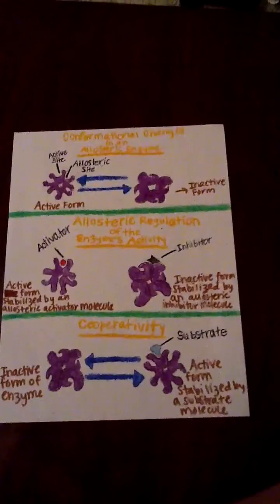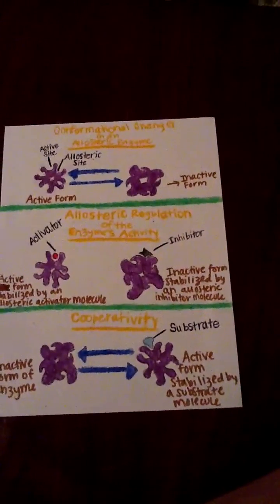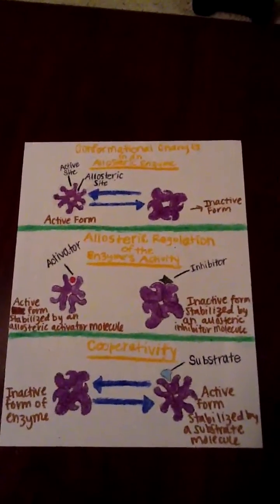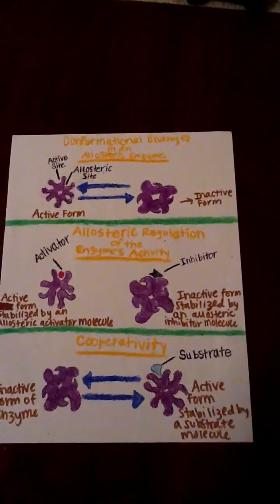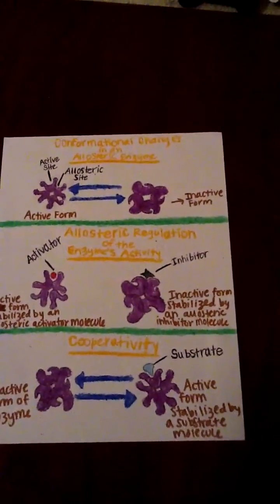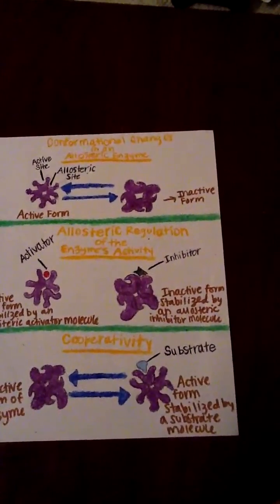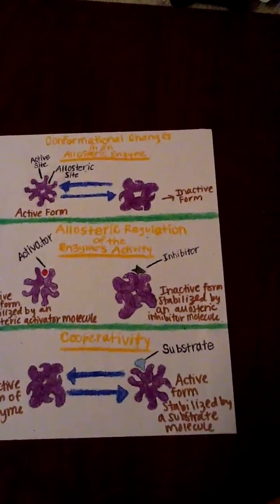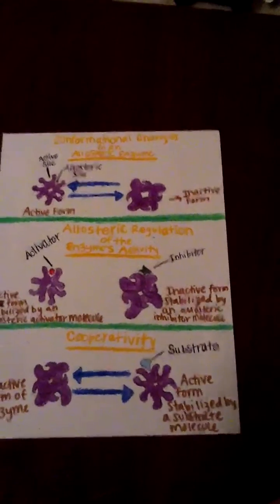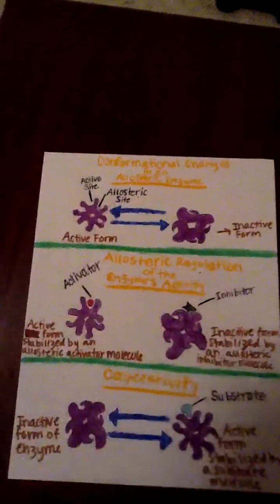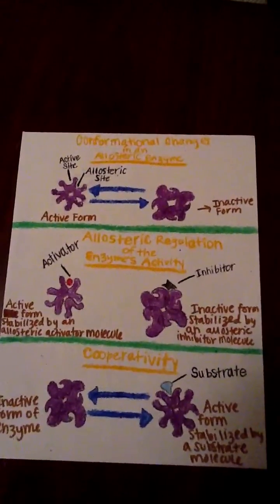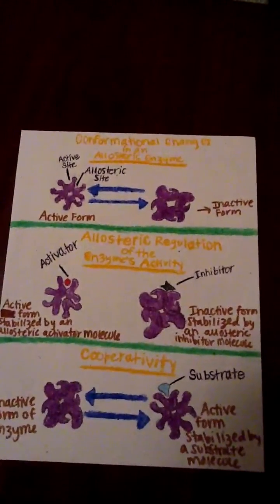These two together summarize allosteric regulation of enzyme activity. What takes place in the first picture is conformational changes in allosteric enzymes. Most allosteric enzymes are constructed from two or more polypeptide subunits, each having its own active site. The enzyme oscillates between two conformational states, one active and the other inactive. Remote from the active sites are allosteric sites, which are specific receptors for regulators of the enzyme — which may be activators or inhibitors.